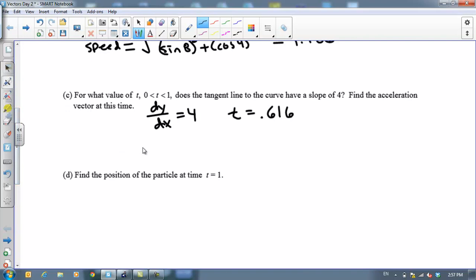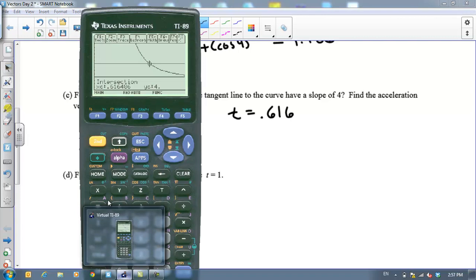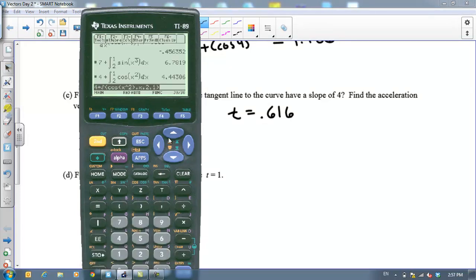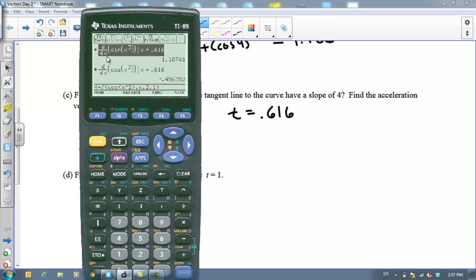All right. So we also have to find the acceleration vector at this time. So what I've done on my calculator, my acceleration vector is the derivative of my velocity vector. So let's go back to the home screen here. What I did, first of all, is I found the derivative of x prime, which would give me x double prime. And I told my calculator to evaluate that at 0.616 because it says acceleration vector at that time. And then I took the derivative of y prime, which would give me y double prime, to get the y component of our acceleration vector. And that gave me negative 0.456. So I took the derivative of x prime and the derivative of y prime to get my acceleration component, and I plugged in 0.616.